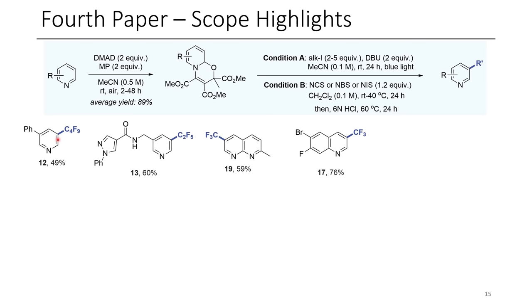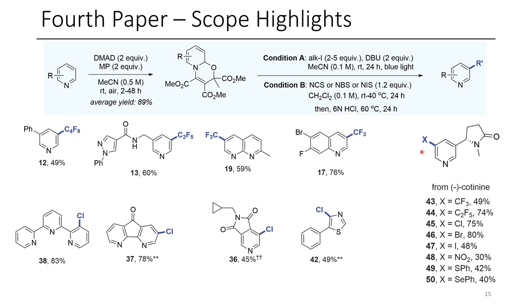In terms of other functionalization, here's an example of cotinine, where they were able to convert it to several different analogs. Not only did this work with pyridine, but also with thiazole and other interesting pyridine-containing compounds. Compound 38 is particularly notable — the monochlorination of a pyridine in the presence of other pyridines. The meta-selectivity is really good, although occasionally, as with 2-phenylpyridine, they observe a mixture of 3- and 5-substituted products, and occasionally with multiple pyridines they see some difunctionalization, depending on the electrophile chosen.